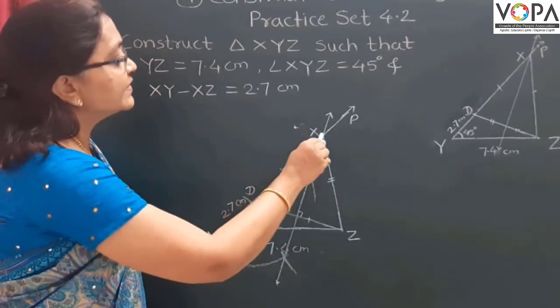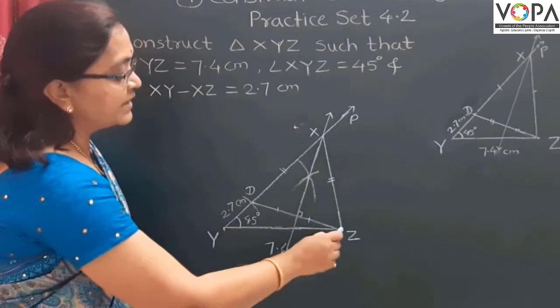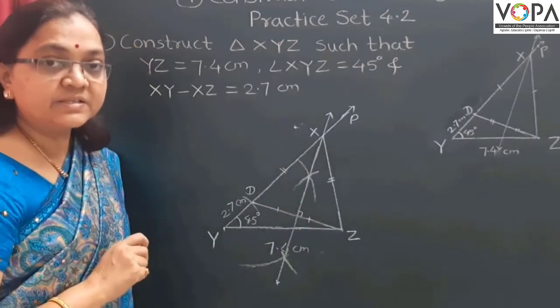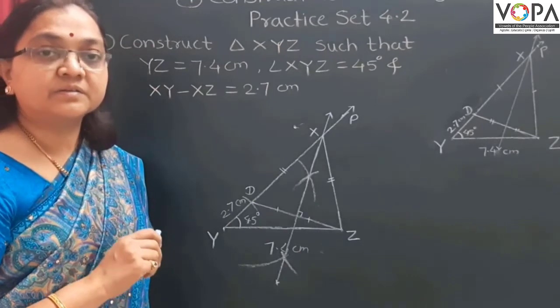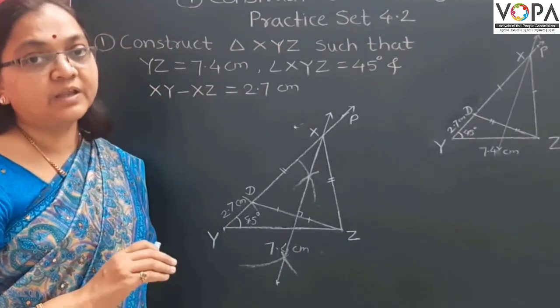And this is our required triangle XYZ. In this way, you can construct the triangle from the given information.